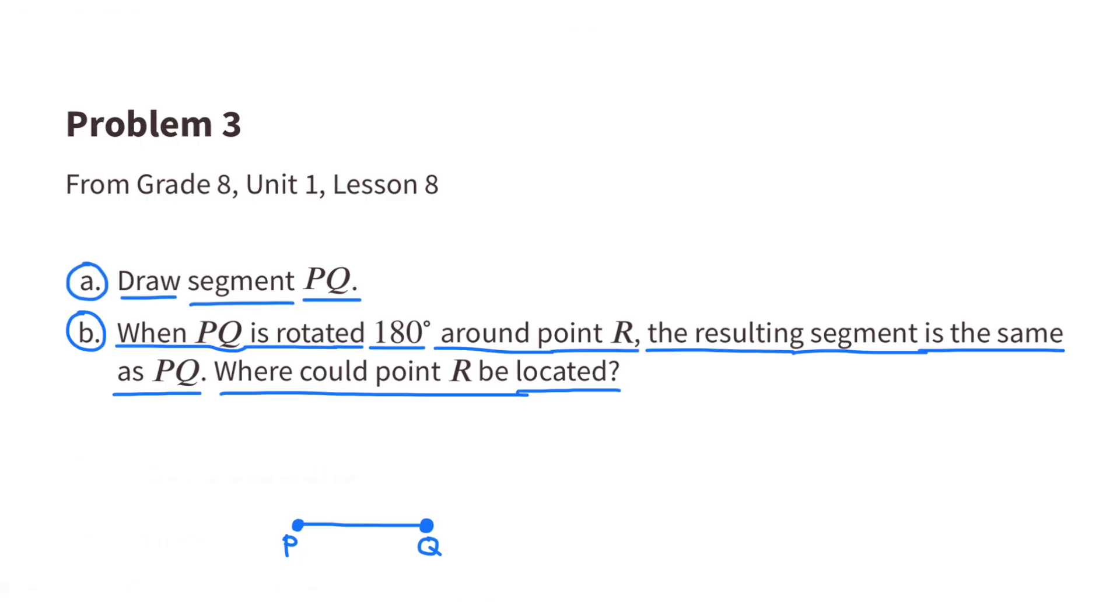B. When P.Q. is rotated 180 degrees around point R, the resulting segment is the same as P.Q. Where would point R be located?